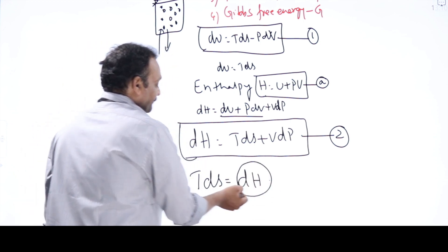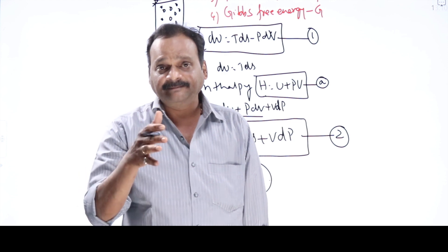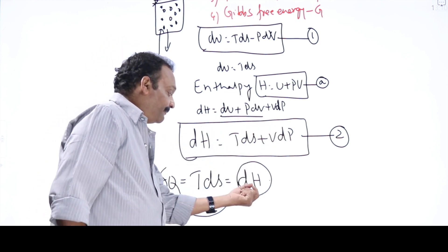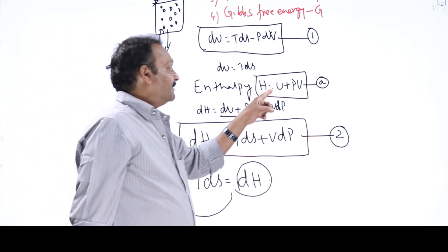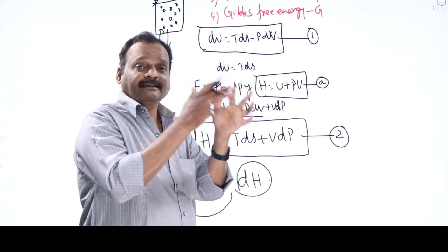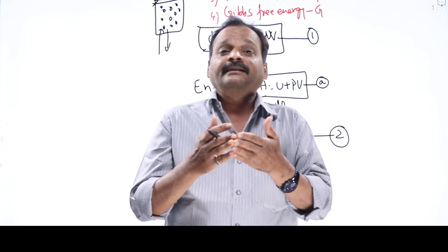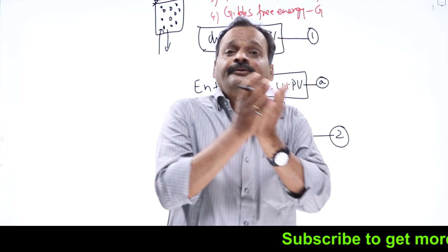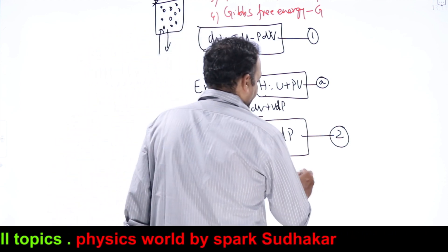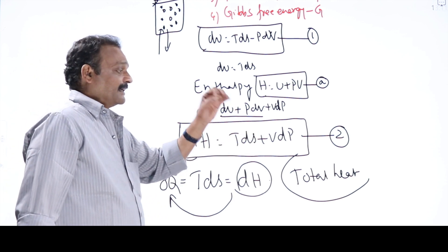In a reversible isobaric process, the change in enthalpy is equal to the amount of heat given or taken. If you measure the enthalpy of the system, it gives the amount of heat present in the system — the heat content — in a reversible isobaric process. That's why enthalpy is also known as total heat. So dH equal to T dS plus V dP is the governing equation for changes in enthalpy.